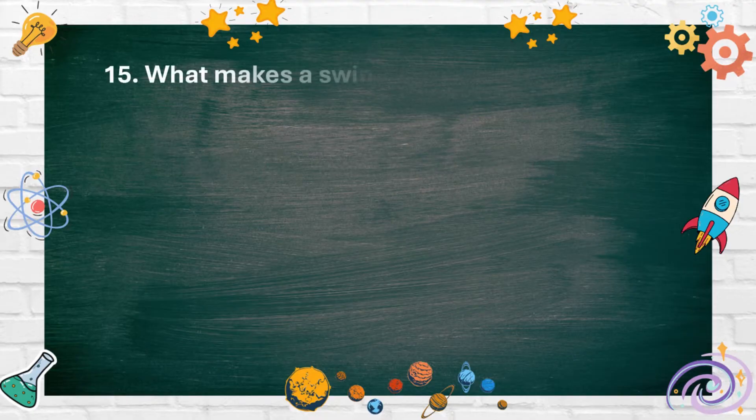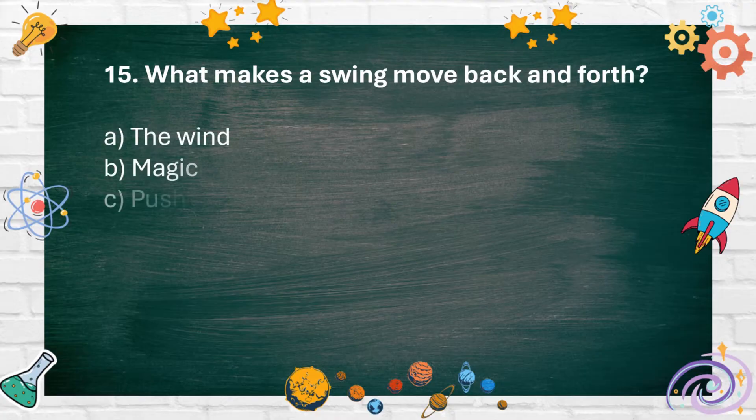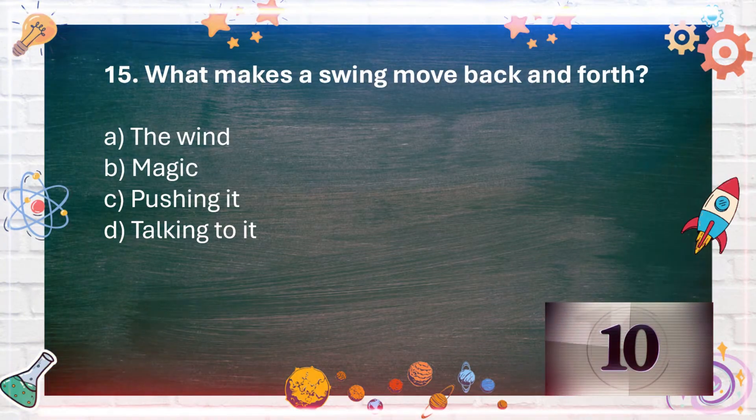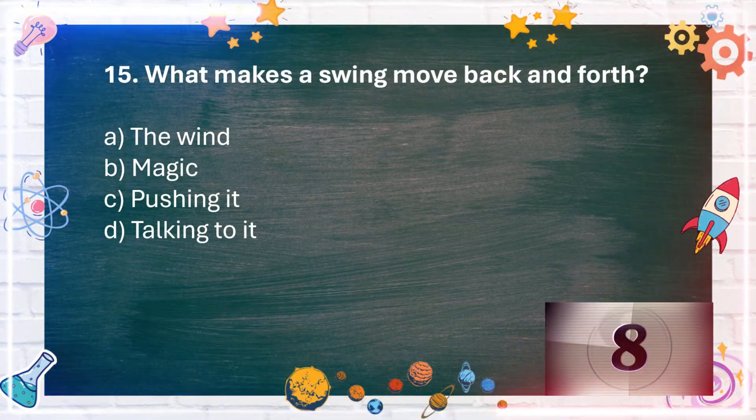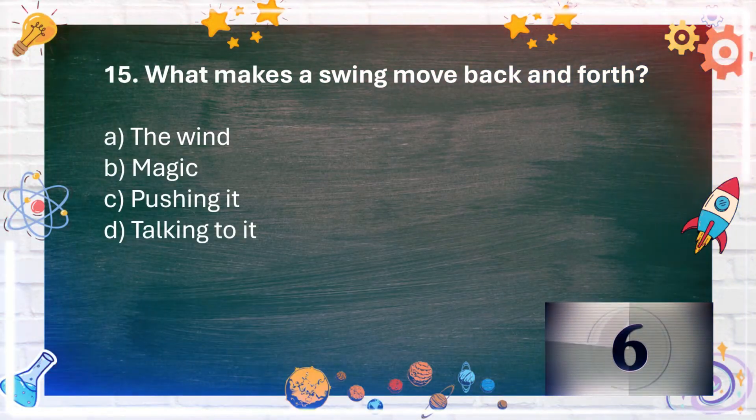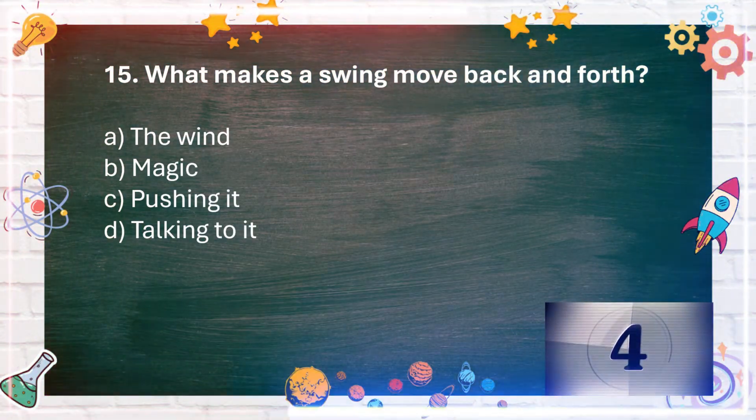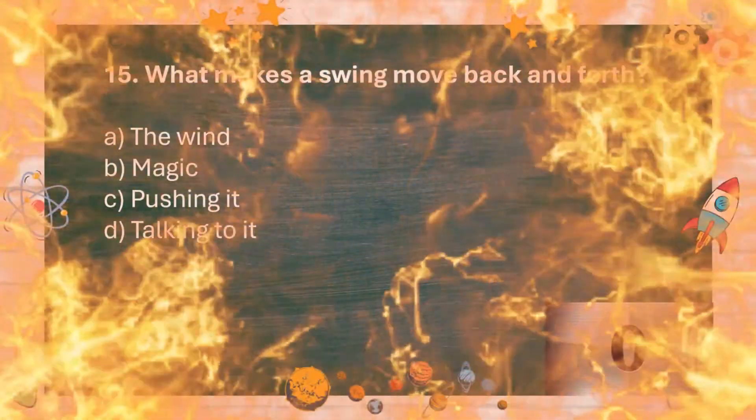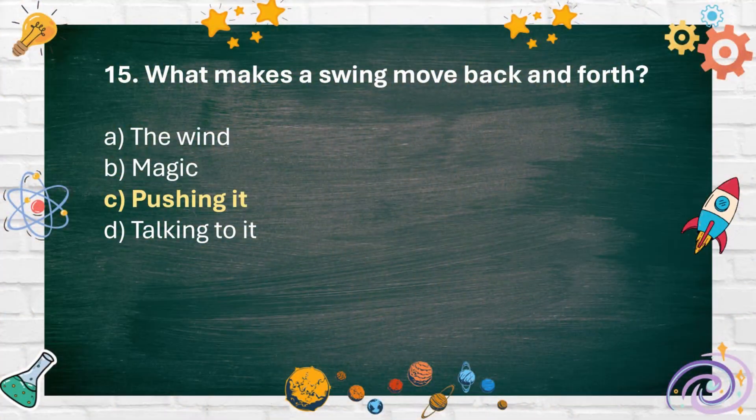Number 15. What makes a swing move back and forth? A. The wind B. Magic C. Pushing it D. Talking to it. The answer is C. Pushing it.